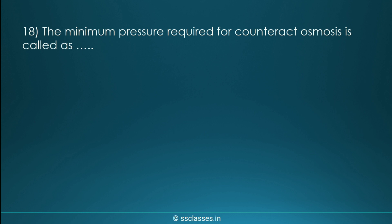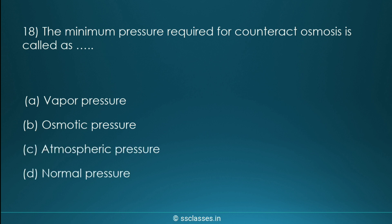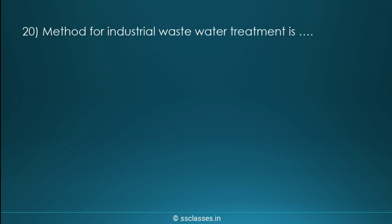Question nineteen: the minimum pressure required to counteract osmosis is called what? Options are vapor pressure, osmotic pressure, atmospheric pressure, or normal pressure. The correct answer is osmotic pressure.